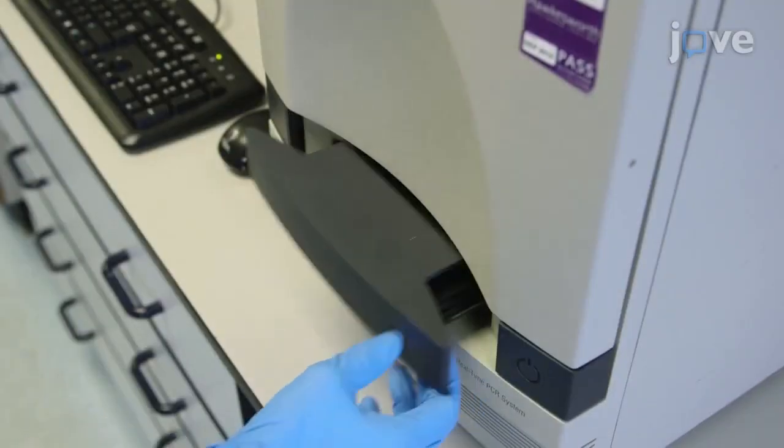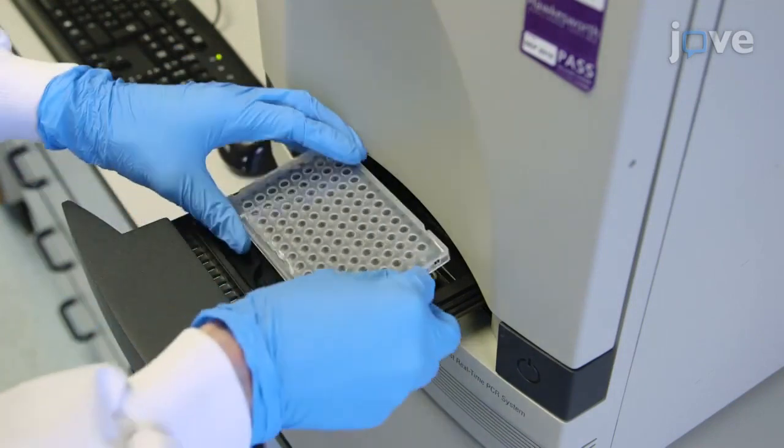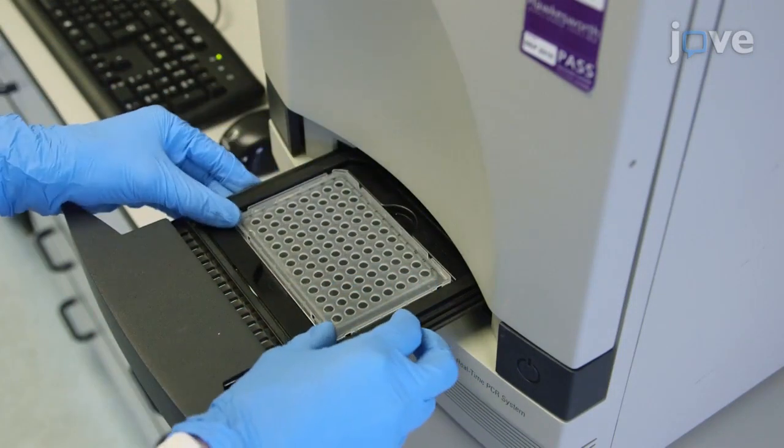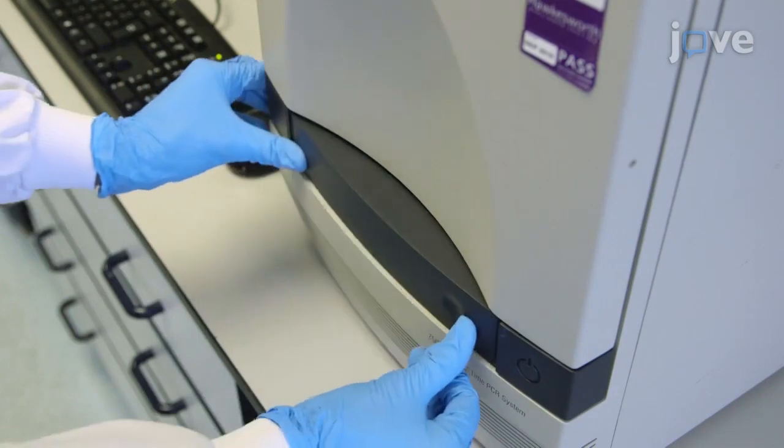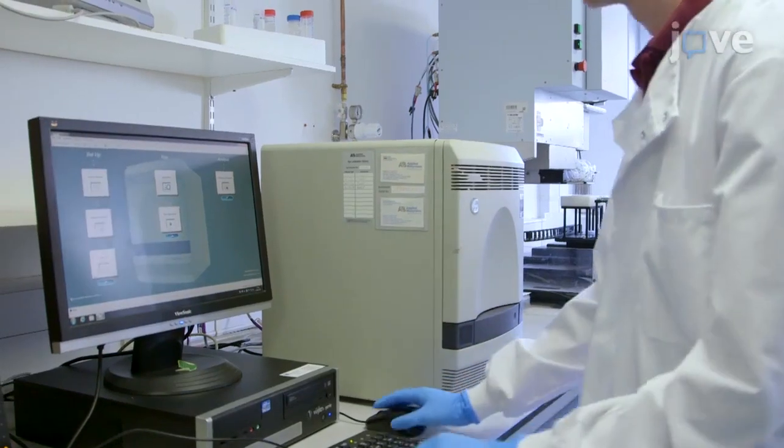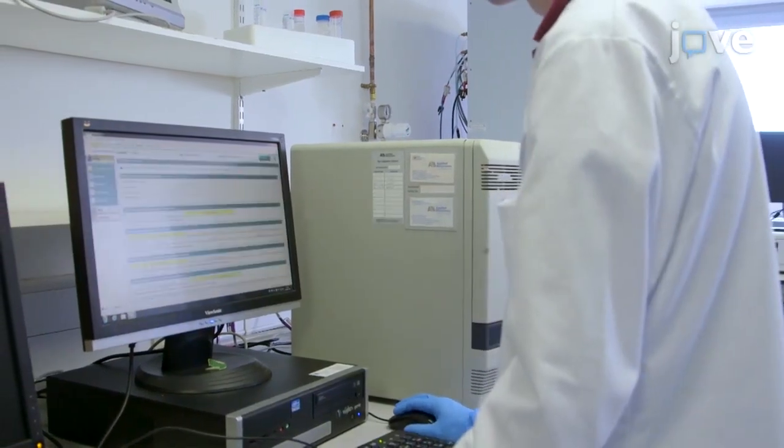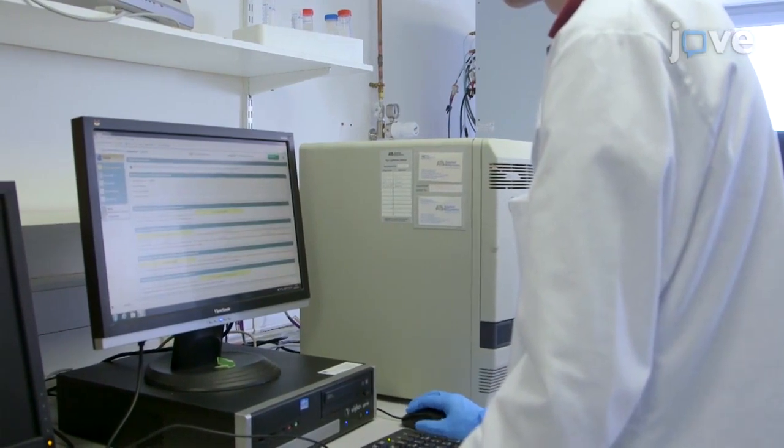To perform the TSA experiment, open the sample drawer by firmly pressing the indent on the right-hand side of the drawer. Place the 96-well tray in the RT-PCR system with well A1 to the back left.